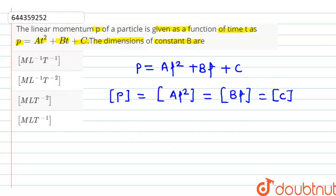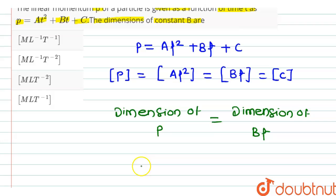So here we can say that the dimension of p, that is linear momentum, is equal to dimension of b into t. We know that linear momentum is the product of mass and velocity.